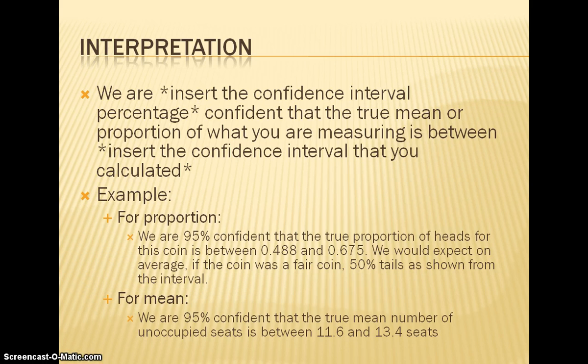So an example, for proportions, it would be: we are 95% confident that the true proportion of heads for this coin is between 0.488 and 0.675. We would expect, on average, if the coin was fair, that 50% of heads and 50% of tails would be shown from the interval.